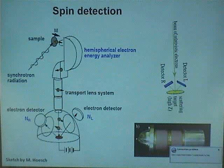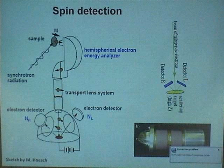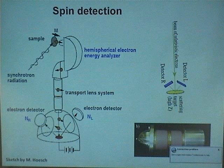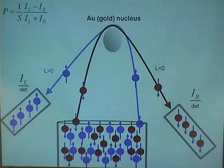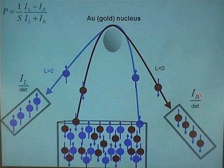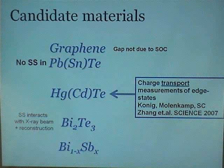Spin detection is tricky. One might think one should do a Stern-Gerlach experiment, but that's terribly inefficient. It turns out a more efficient process is to use Mott scattering, which is itself like the extrinsic spin-Hall effect. So we're using the extrinsic spin-Hall effect to measure spin degrees of freedom. We have an electron beam coming out of the detector, scattering from a gold nucleus with spin-orbit coupling LS, giving two asymmetric channels. The left detector counts what we call spin-up, and the right detector counts spin-down.